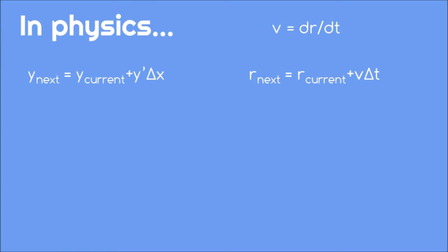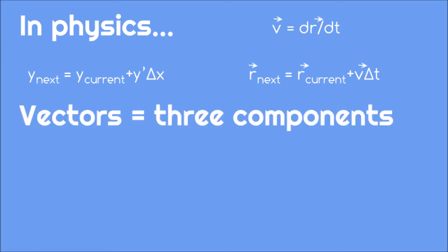Lastly, we need to promote the position and velocity from single numbers to vectors. A vector is a collection of three numbers called components. For the position, the three components are the coordinates x, y, and z.